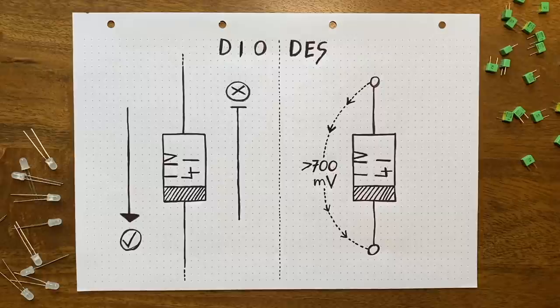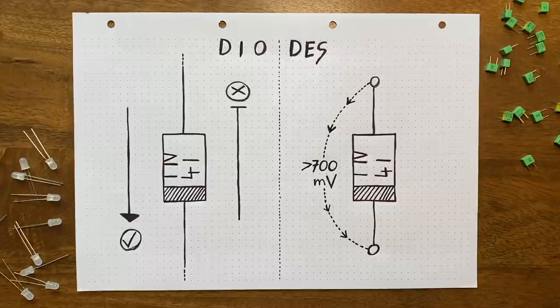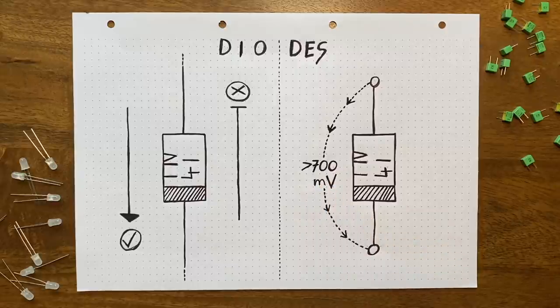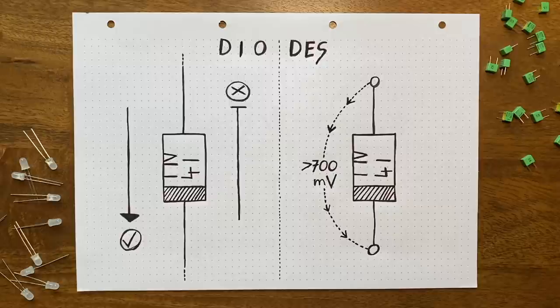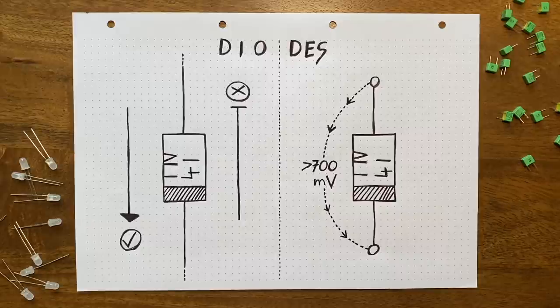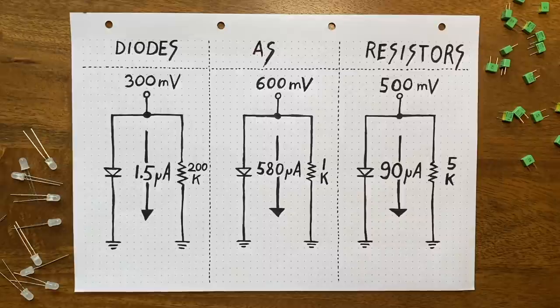But of course, this is again way oversimplified. In reality, a diode won't just abruptly turn on as you increase the voltage here from 699 to 700 millivolts. That's because a diode is not a digital device, and therefore does not have those clearly defined on and off states. Instead, it's messy and analog. This means that a diode will never be completely closed, but rather open to varying degrees depending on the input voltage. Think of it like this.